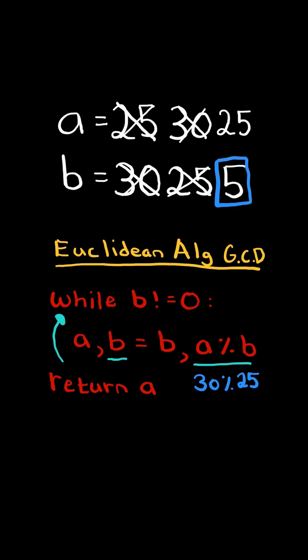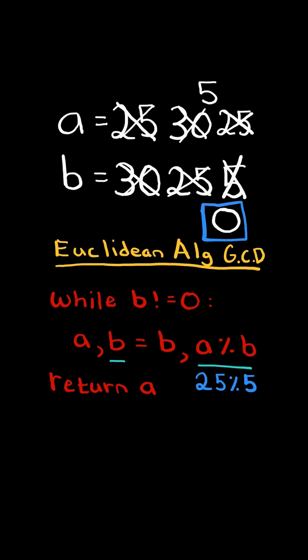And we continue this process. We set a to b and set b to a mod b. In this case, 25 mod 5 is equal to 0.